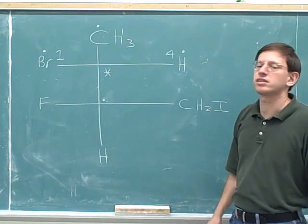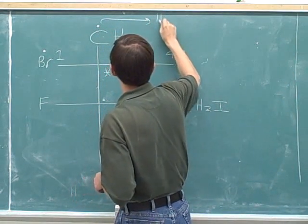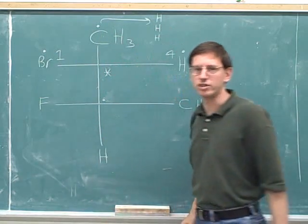Since they're tied, we have to list the three atoms that each of those dotted carbons is attached to. The carbon on top is attached to a hydrogen, and another hydrogen, and another hydrogen.